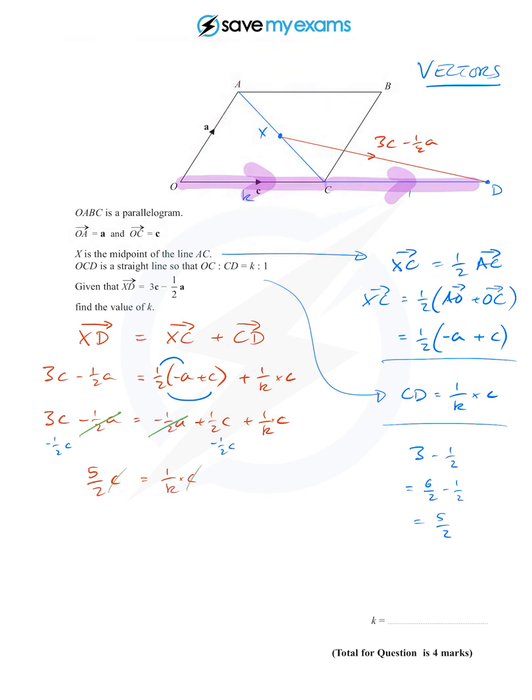I get five over two is equal to one over k. And flipping the whole thing upside down, I get that two fifths is equal to k. And we're done. We've had to do quite a lot of hard work along the way, but it did just all fall out in the end.